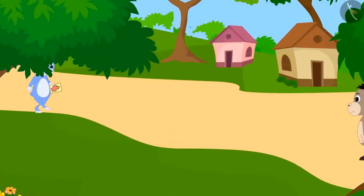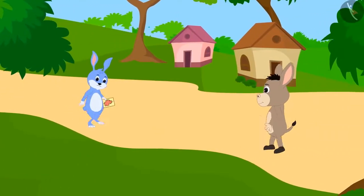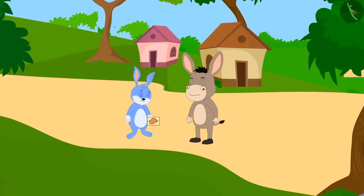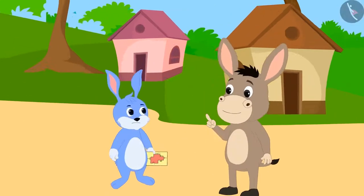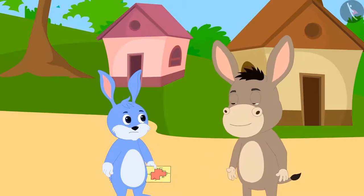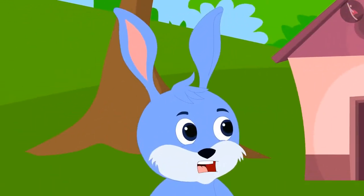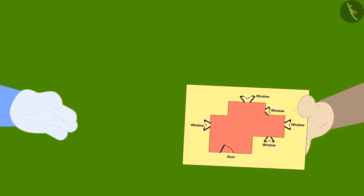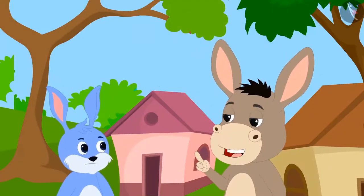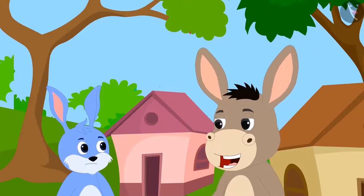Bunny was returning home with a sad face when he saw Bholla the donkey on the way. Bholla asked the reason for Bunny being depressed. Bunny told him the whole story. Bholla told Bunny that he could help him. Bunny was shocked.